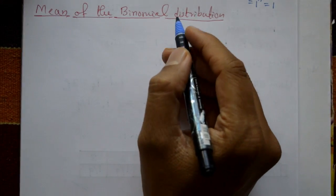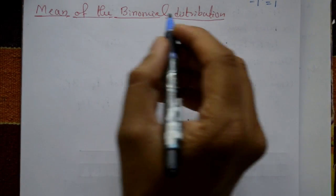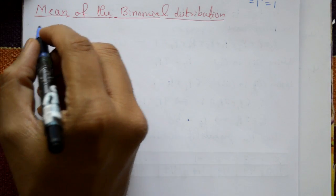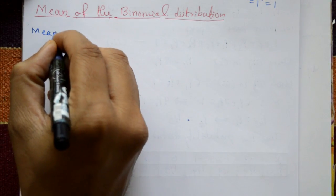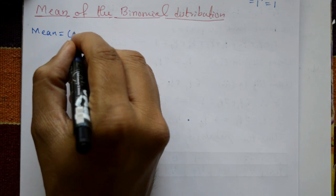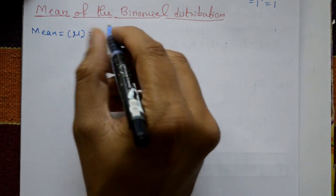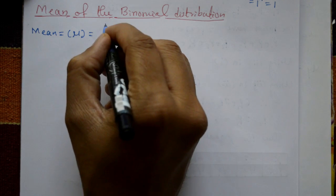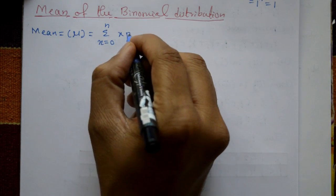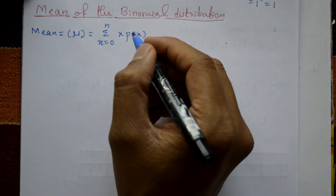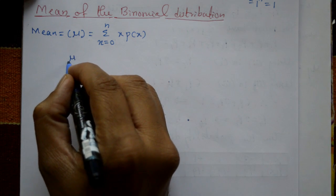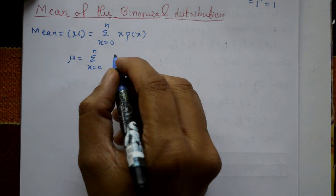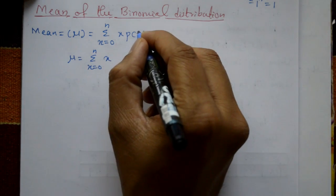What is the mean of the binomial distribution? The mean, symbol mu, is defined as: mu is equal to summation x equals 0 to n of x into p(x).